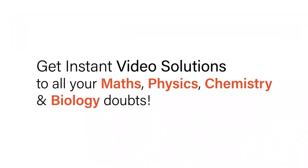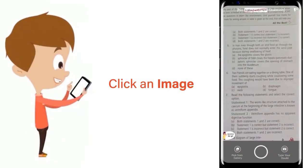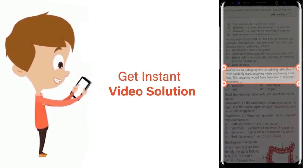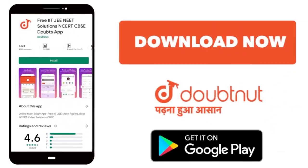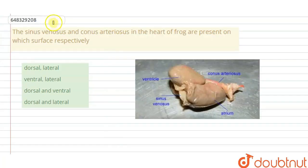With Doubtnet, get instant video solutions to all your maths, physics, chemistry and biology doubts. Just click the image of the question, crop the question and get instant video solution. Download Doubtnet app today. The question is: sinus venosus and conus arteriosus in the heart of frog are present on which surface respectively?